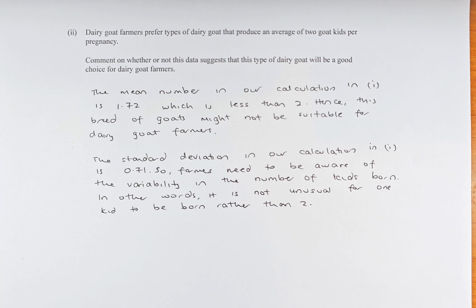They would need a different distribution for it to meet the dairy goat farmer's preference. The standard deviation we calculated in part 1 is 0.71, so the farmers need to be aware of the variability in the number of kids born. In other words, it is not unusual for only one kid to be born rather than 2. The variation is present — 0.71 is not a small number, meaning it's still quite variable, and it's more likely that 1 kid will be born instead of 2.